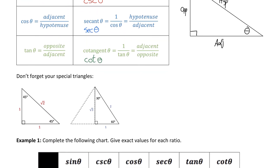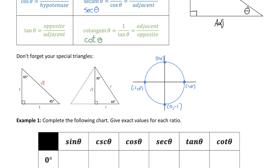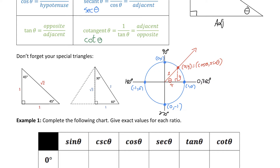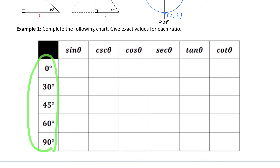Before we do any questions, I'm going to remind you of a couple of tools you'll need. You need to know your isosceles special triangle with angles of 45-45-90 and side lengths of 1, 1, and root 2. You also need to know the half equilateral special triangle with angles of 60 and 30 and side lengths of 2, 1, and root 3. The other tool is the unit circle — the x-coordinate gives the cosine ratio and the y-coordinate gives the sine ratio of the angle.